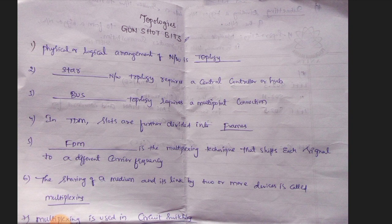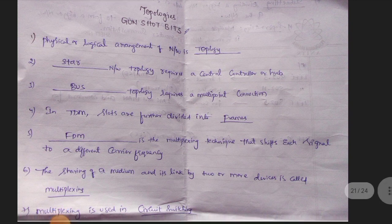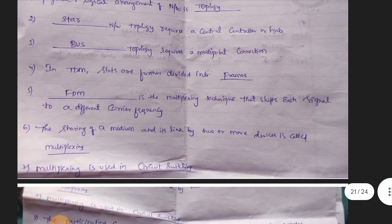In TDM, slots are further divided into frames. This is very important. FDM is the multiplexing technique that shifts each signal to a different carrier frequency. The sharing of a medium and its link to multiple devices is called multiplexing. Multiplexing is used in circuit switching.